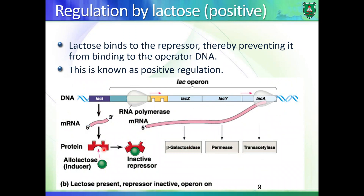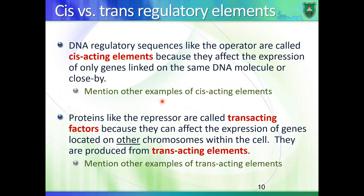An example of a trans-acting element is the repressor itself. If you take the lac I gene and put it somewhere far away from the lac operon — if it has its own promoter — it can still be transcribed, produce a repressor protein, and this protein would bind to the operator. Think of other types of trans-acting elements.